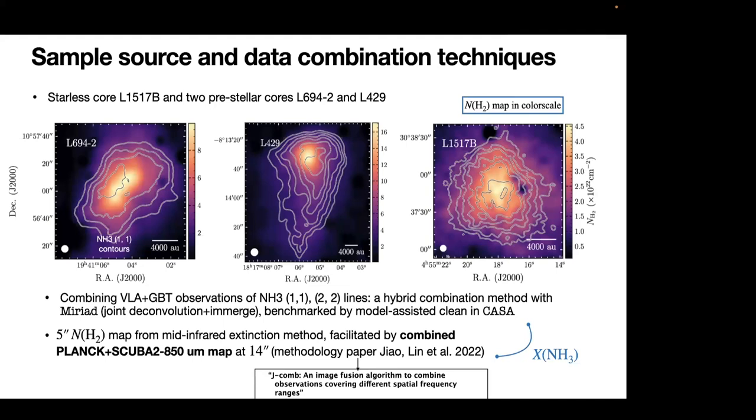The maps shown here are the high angular resolution molecular hydrogen maps in color scale. The contours are showing the integrated intensity map of the ammonia one-one line. This method of using ammonia to probe the temperature is a rather conventional approach to understand the thermal structure of pre-stellar cores. But in this work, we try to utilize the most advanced image combination technique. So we really push the image fidelity when it comes to the combination method.